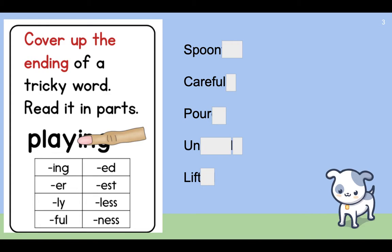Let's practice with these words. Instead of using my finger, I've used white boxes on screen, but when you read, you can use your finger to cover up part of the word. You could also use an index card or a post-it note. So we have the word 'spoon.' I just uncovered the ending -ful. When I put those together, I get the word 'spoonful' — a long word where I recognize the part 'spoon' once I cover the ending.